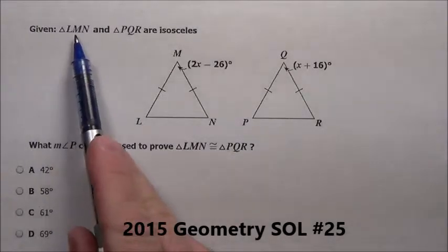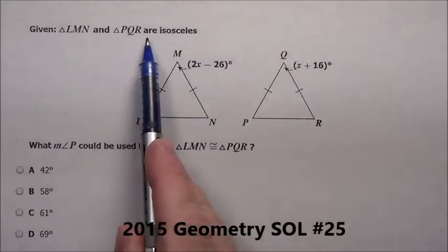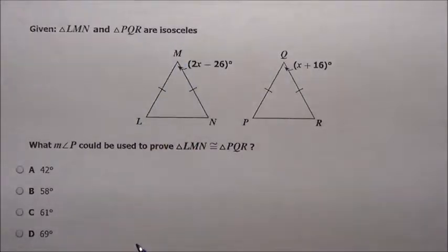Here's problem 25. It says, given triangle LMN and triangle PQR are isosceles, so they're isosceles triangles.